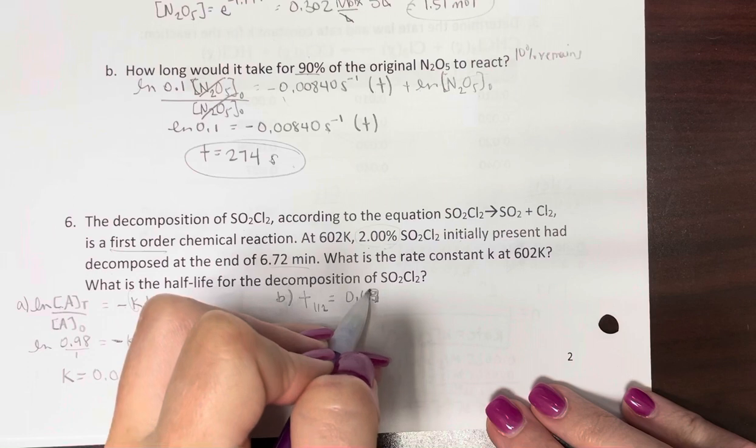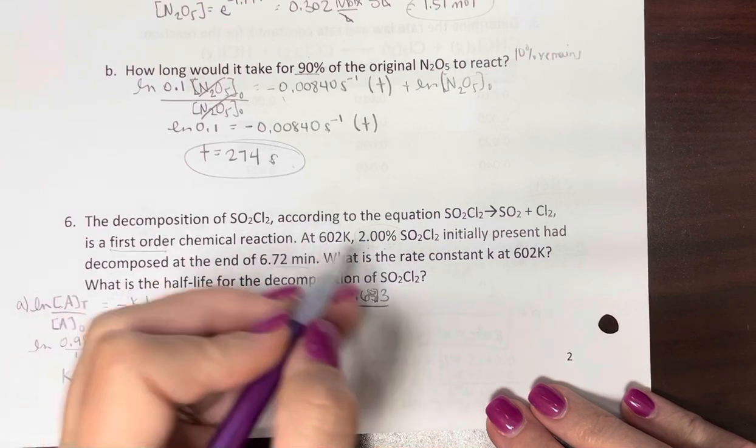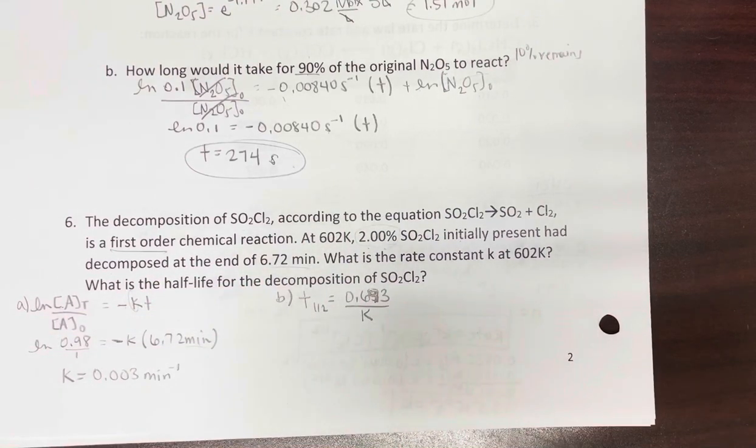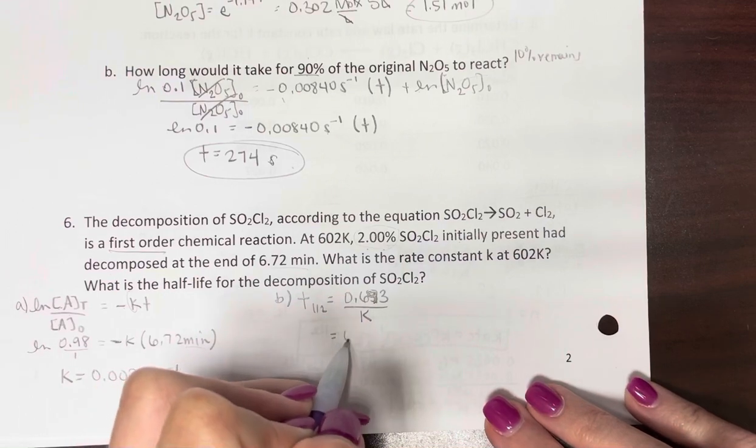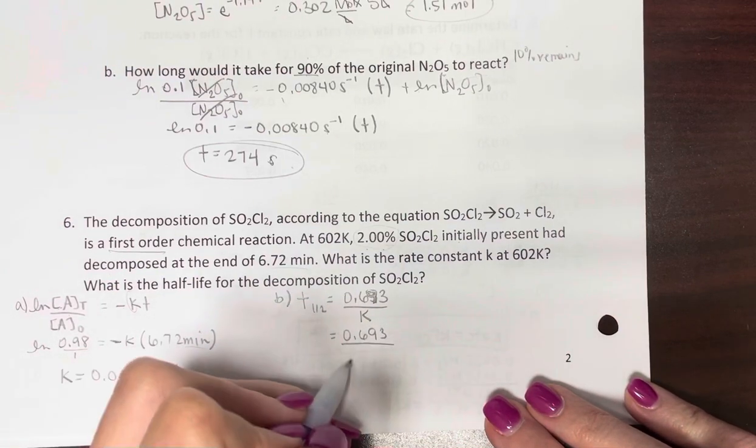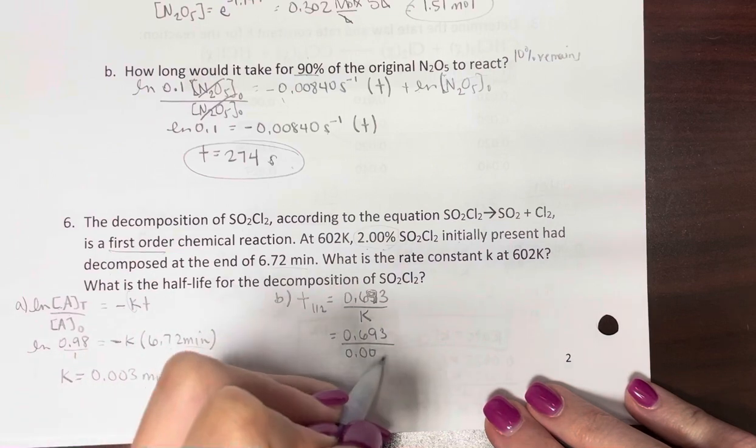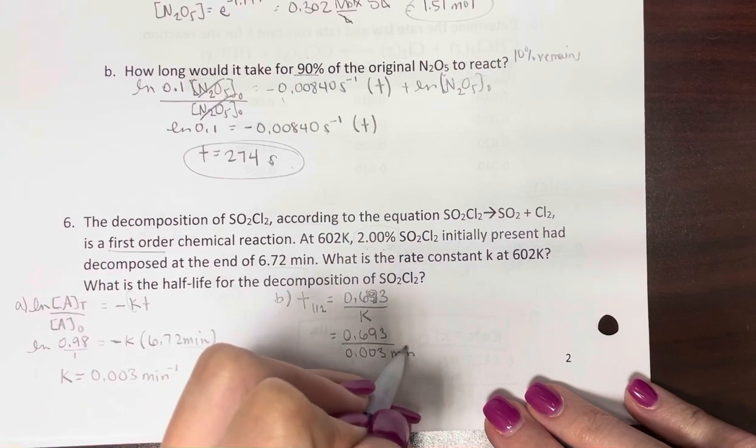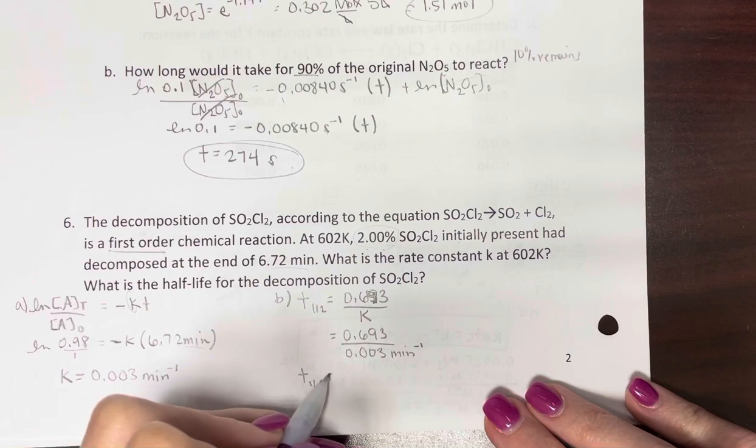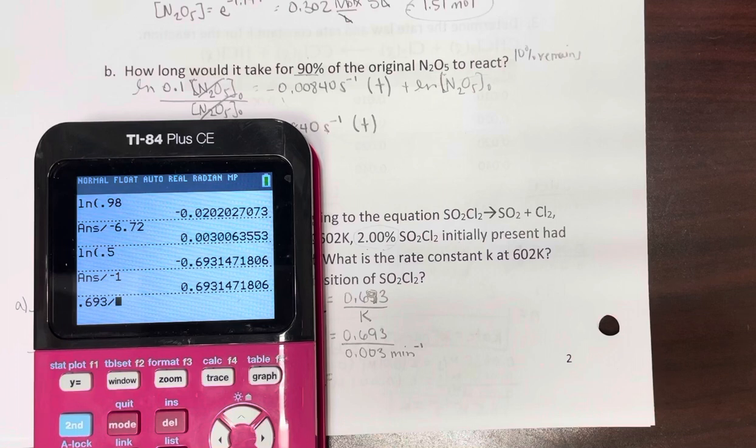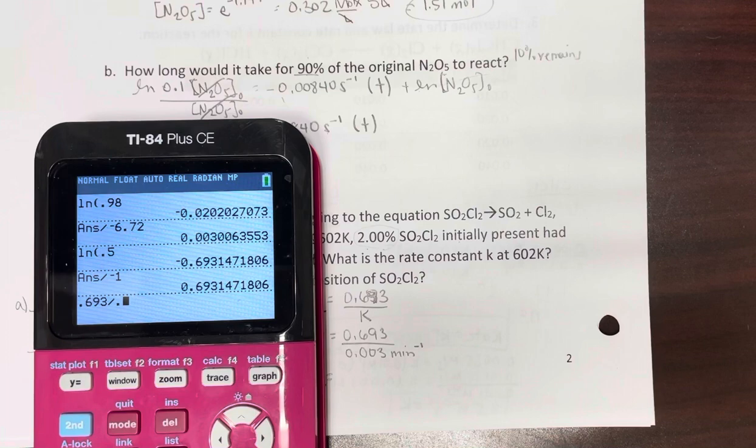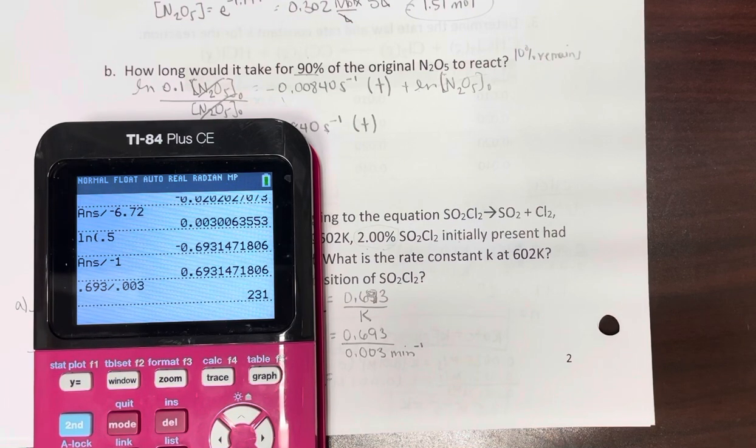You get 0.693. Divide by k, and the negatives cancel out. So if you don't remember the shortcut, that's okay, figure it out yourself, it's not hard.